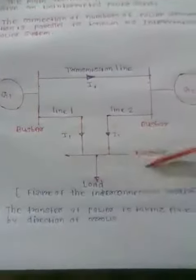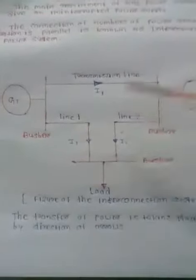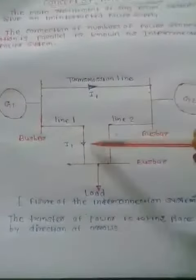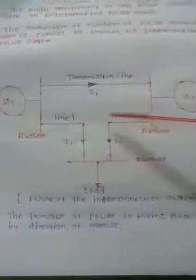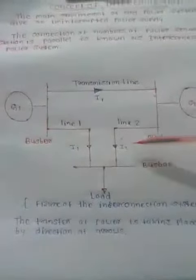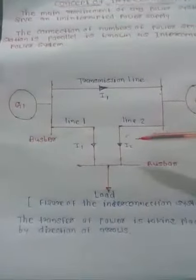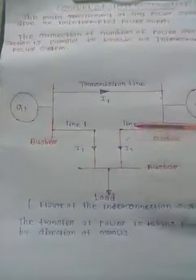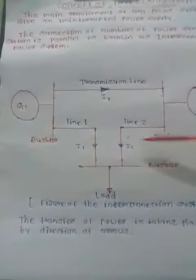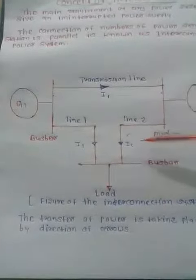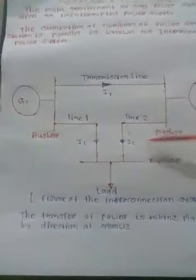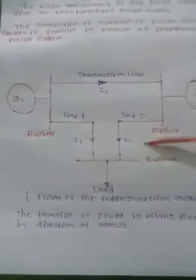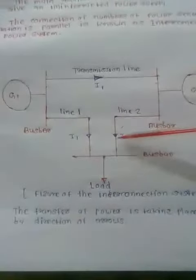The transfer of power takes place in a bi-directional manner. The order of transmission for Line 1 and Line 2 derives equal power in the system. The system operates at the sum of the terminal voltages, and the line current equals the transmission line current.